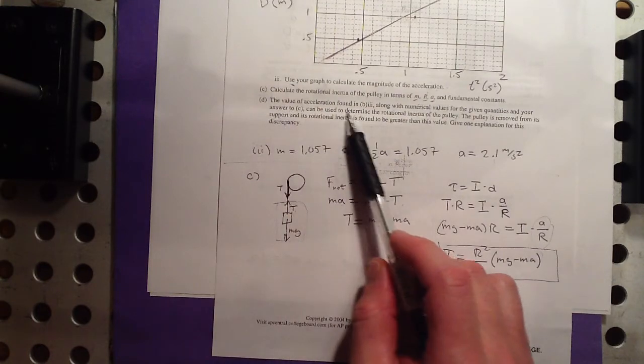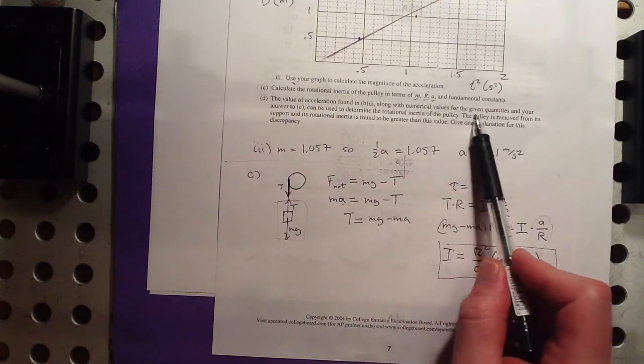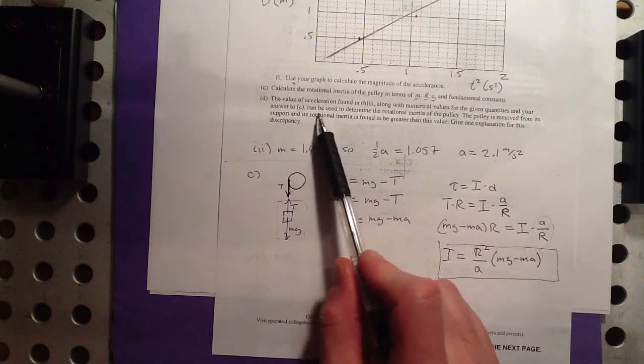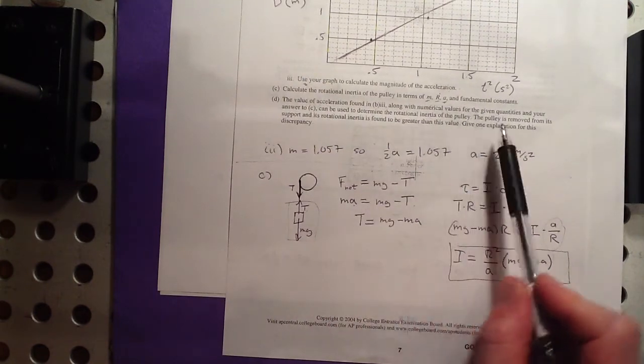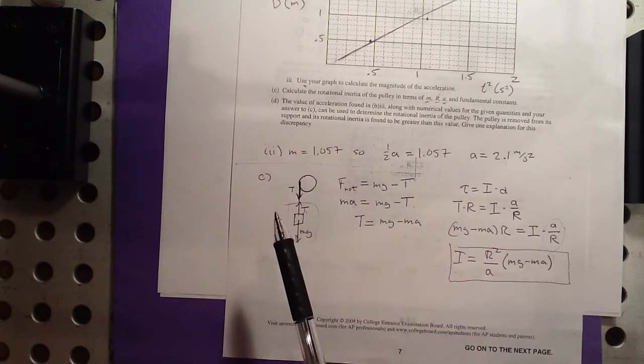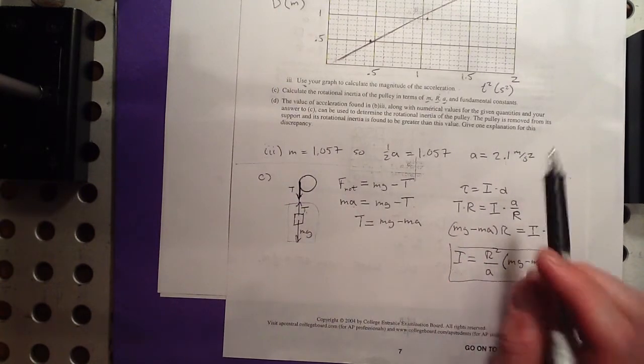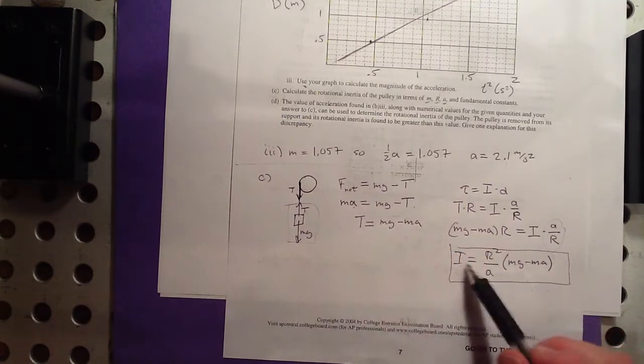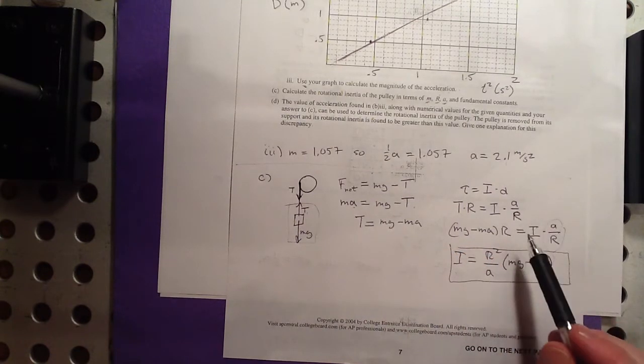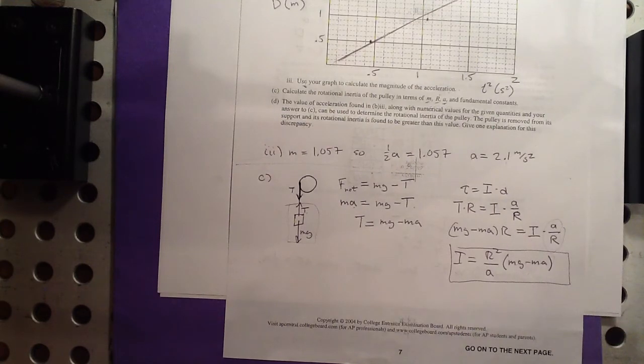Part D, the value of acceleration found in 3, which is this, along with numerical values for the given quantities and your answer to C, can be used to determine the rotational inertia of the pulley. The pulley is removed from its support, and its rotational inertia is found to be greater than this value. So give one explanation for this discrepancy. So, let's see, that means what we measured was actually a little bit less. The real moment of inertia, or rotational inertia, was more. That means it seemed like it was more massive. So, it turned faster than it was supposed to.